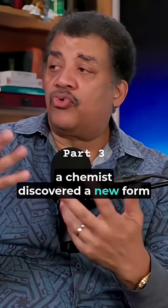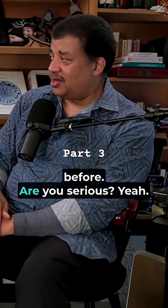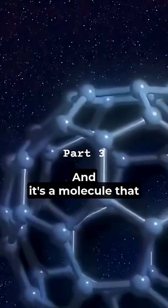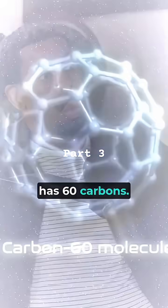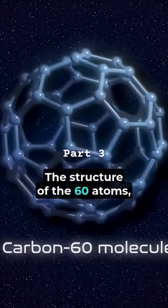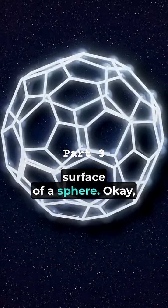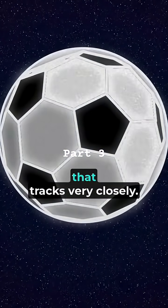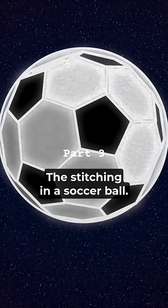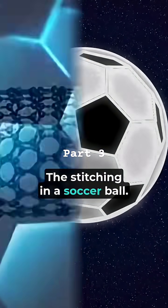Two years back, a chemist discovered a new form of carbon that we had never seen before. Are you serious? Yeah. It's a molecule that has 60 carbon atoms. It's the structure of the 60 atoms - they're at the vertices of the surface of a sphere that tracks very closely the stitching in a soccer ball.